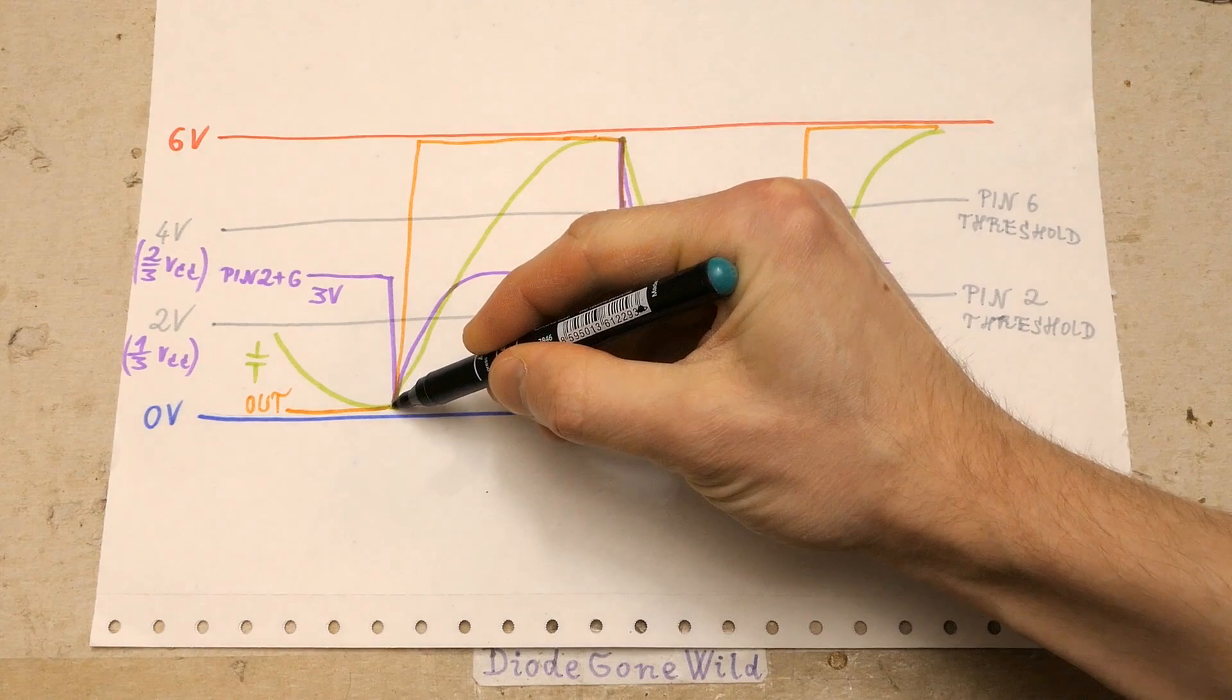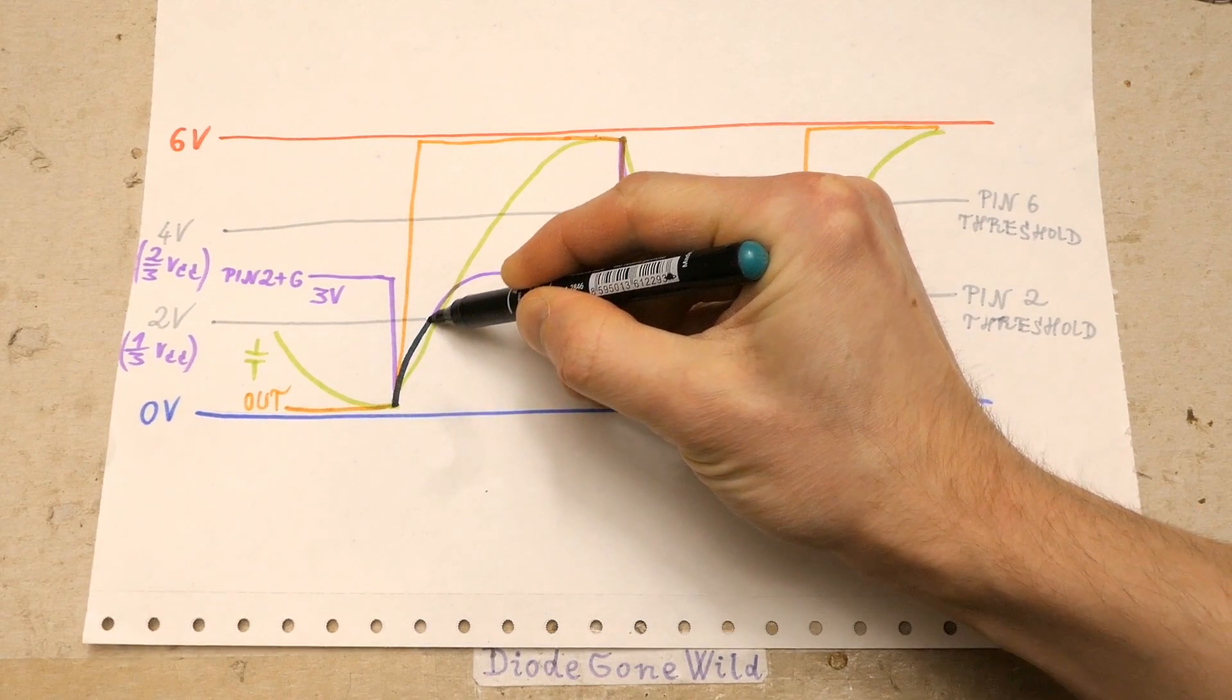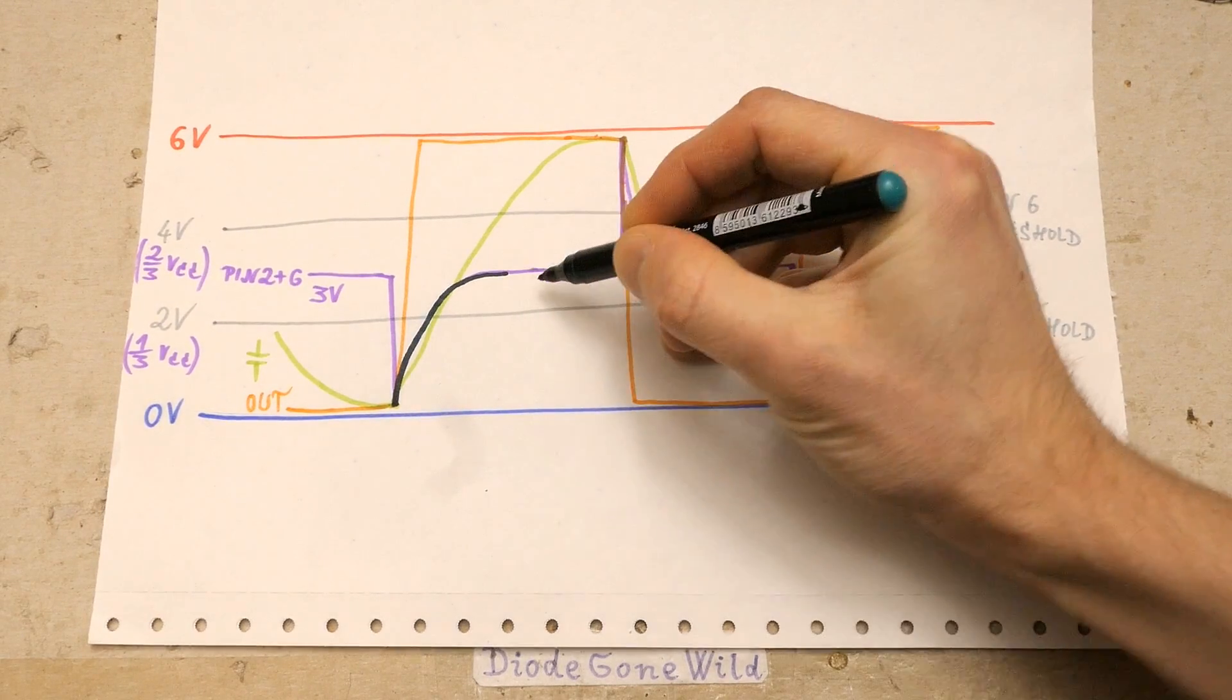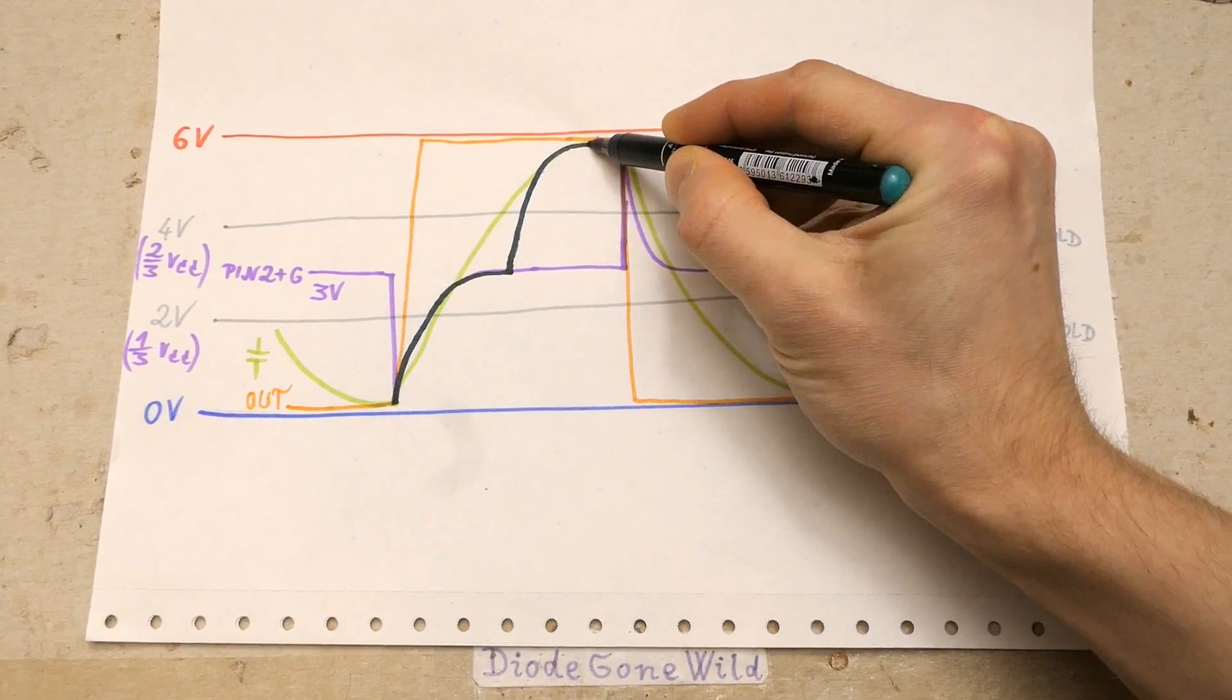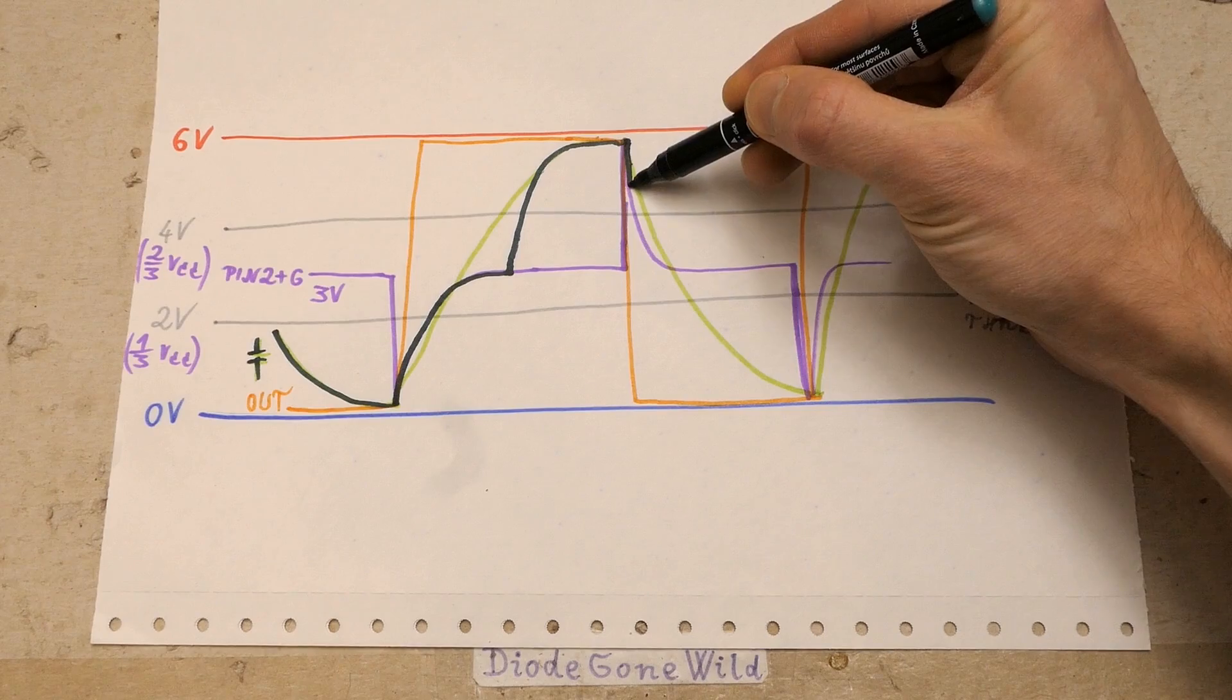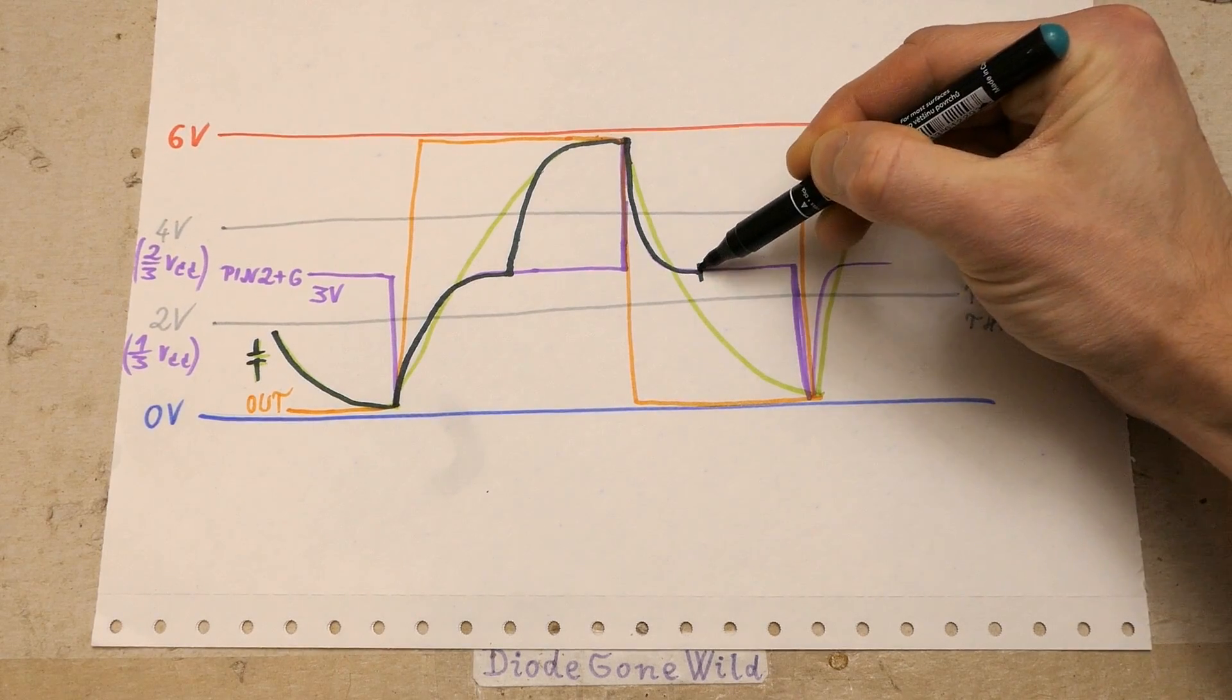Of course more accurately the voltage on the capacitor is copying the voltage at the input when the button is pressed. And then when the button is released, it charges based on the voltage on the output and the other way as well. Here the button is pressed, here it's released. The button is basically pressed from here to here and from here to here.